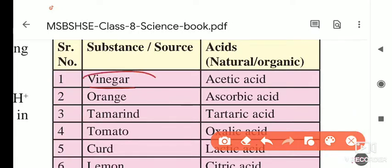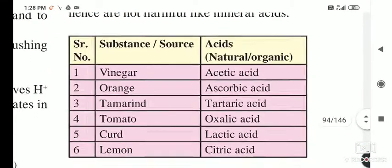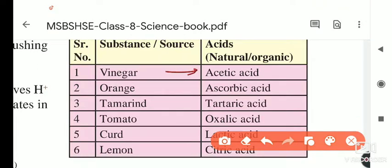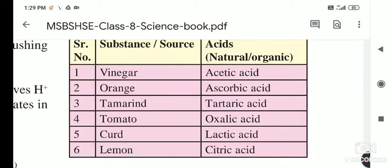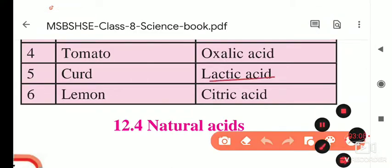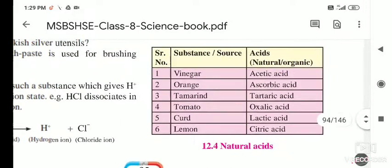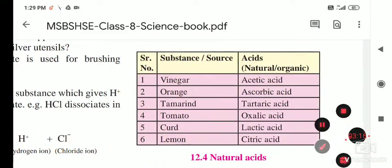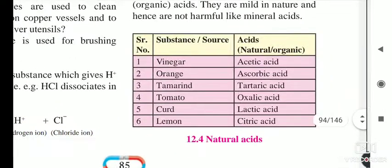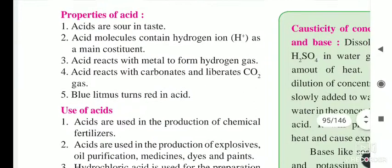In vinegar — used in Chinese foods — acetic acid is present. In oranges, ascorbic acid is present. In tamarind, tartaric acid is present. In tomatoes, oxalic acid is present. In curd or buttermilk, lactic acid is present. In lemons, citric acid is present. These are called natural or organic acids. Hydrochloric acid, sulfuric acid, and nitric acid are mineral acids.